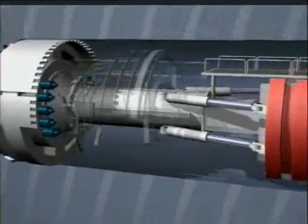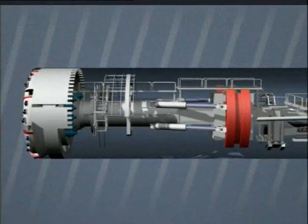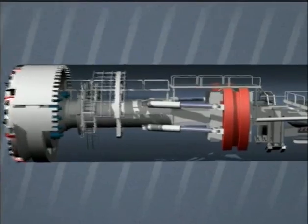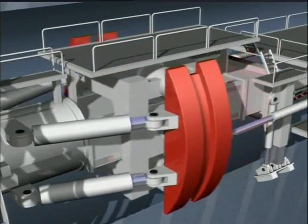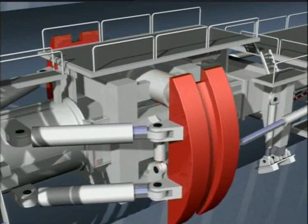When the TBM is working in hard rock, it uses a so-called gripper to press against the rock on both sides. Each stroke of the gripper takes the drive forward another 2 meters.